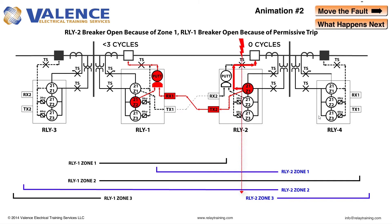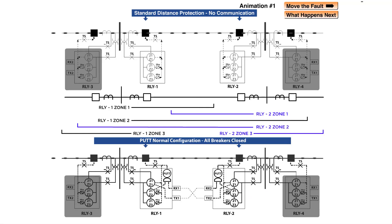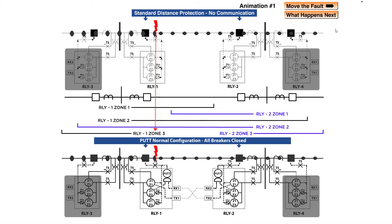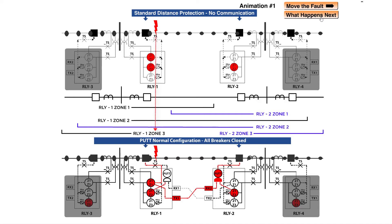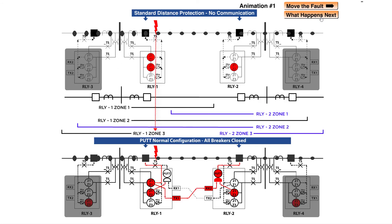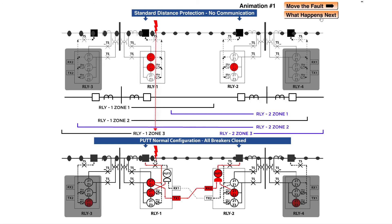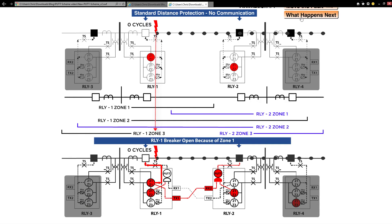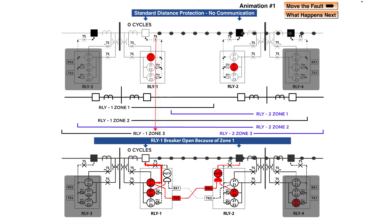Now let's look at how the permissive underreaching transfer trip scheme compares to a regular distance protection scheme. Our standard protection scheme is at the top of the animation and the PUTT scheme is at the bottom. Watch what happens in each scheme as I cycle through the original fault. We have a fault closer to Relay 1 — both schemes have identical operating characteristics so far. Relay 1 sees a Zone 1 and Zone 2 fault while Relay 2 sees a Zone 2 fault. Relay 1 trips first in both schemes because they both detect a Zone 1 fault. Relay 2 trips after 20 cycles in the standard scheme and almost instantaneously using the PUTT scheme, because there were two pairs of eyes that verified the fault was on the line.